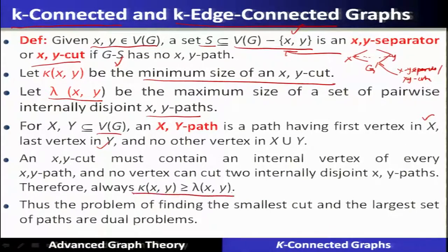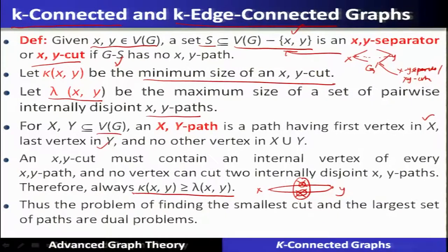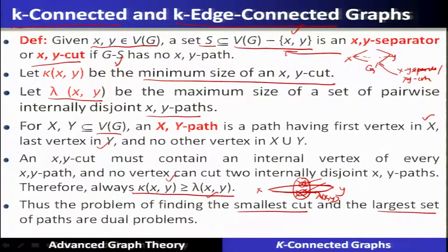For two internally disjoint x-y paths, if we remove one vertex it will not disconnect them because there is an alternative; both vertices together will disconnect the graph. If the graph has lambda different x-y paths, taking one vertex from each path forms the x-y separator. Hence the minimum size of the x-y cut must be at least the maximum number of internally disjoint paths. Thus, finding the smallest cut and the largest set of internally disjoint paths are dual problems.